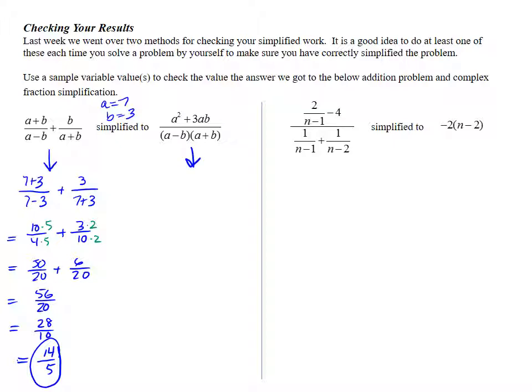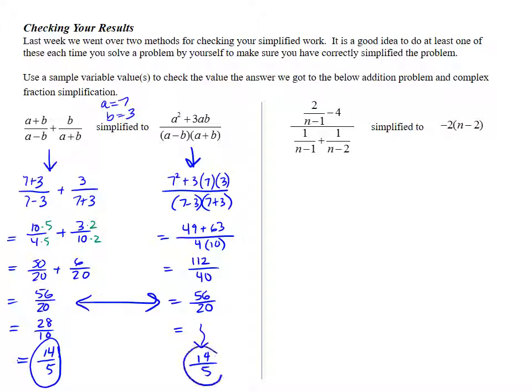It's a good bet that if I get 14 over 5 in the second one when I plug in 7 and 3, that I probably have the right result. So let's try this simplified result. Put a 7 in for the a. So I get 7 squared plus 3 times 7 times 3 all over 7 minus 3 times 7 plus 3. So that will simplify to 49 plus 21 times 3 is 63 over 4 times 10. My denominator is going to be 40. My numerator is going to be, I think, 112. Both of those have a 2 in common. So I'm going to take a 2 out, 56 over 20. And I could keep taking 2's out, but you may recognize right here I've got 56 over 20 on both sides. So this is eventually going to simplify to 14 over 5, which is the same in both cases. So it looks like we did pretty well when we did that simplification.